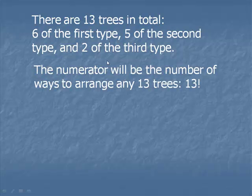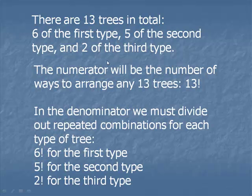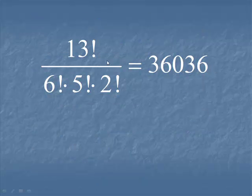The numerator of our calculation will be the number of ways to arrange any 13 trees, which is 13 factorial. For the denominator, we're going to have to divide out the repeated combinations for each type of tree. There would be six factorial for the first type, five factorial for the second, and two factorial for the third. Here's the calculation.